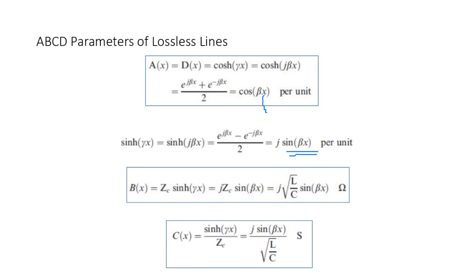Don't forget to change your calculator settings when doing sine and cosine with these numbers — set it to radians, not degrees. These numbers are in radians. So make sure these are radians when you change your settings. So we have A, B, C, D — that's it. Remember, we already determined the equivalent pi circuit for a long transmission line, and we're still talking about long transmission line, but lossless, so R and G equal zero.